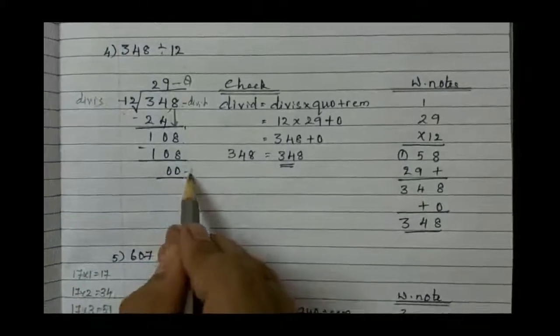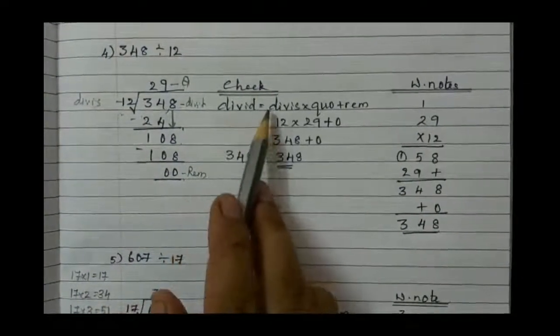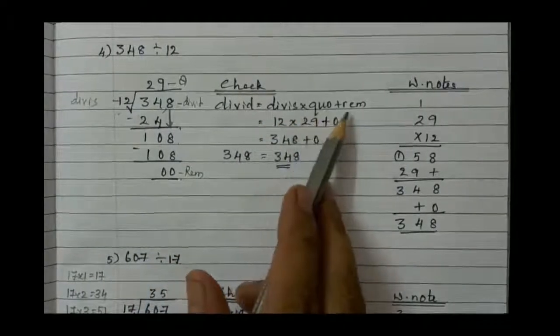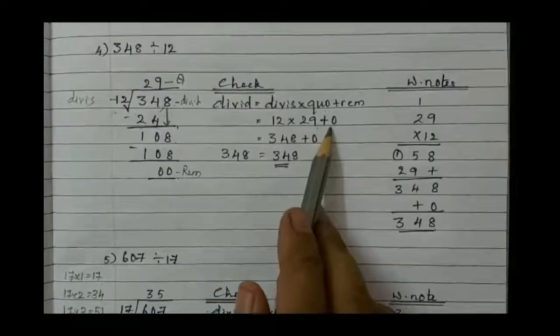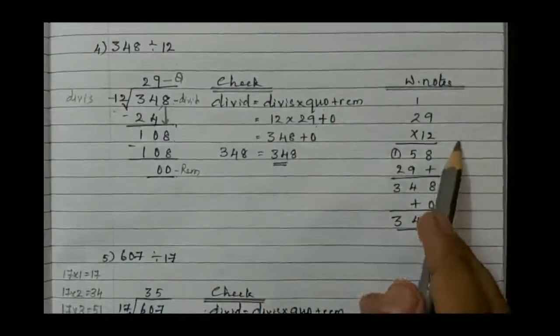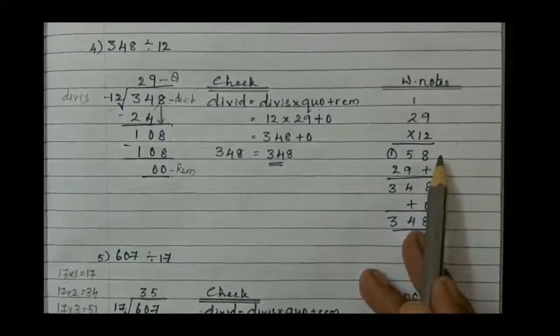0 is the remainder. Write down the formula: that is dividend equals divisor into quotient plus remainder, that is 12 into 29 plus 0. Go for the working note beside to it. 29 into 12, it will be 58.